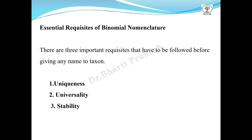What are the essential requisites of binomial nomenclature? There are three important requisites. First, uniqueness: the scientific name should be unique and individualistic, and must be the only name within that nomenclature. Second, universality: the scientific name should be universal and acceptable throughout the world and biological society. Third, stability: the scientific name should be stable and authentic and should not be changed repeatedly, as it is the key to information about a particular organism.